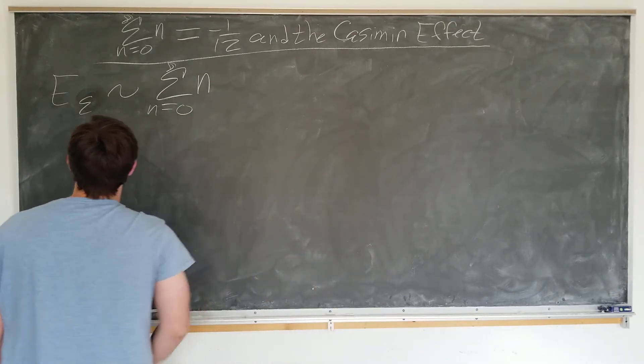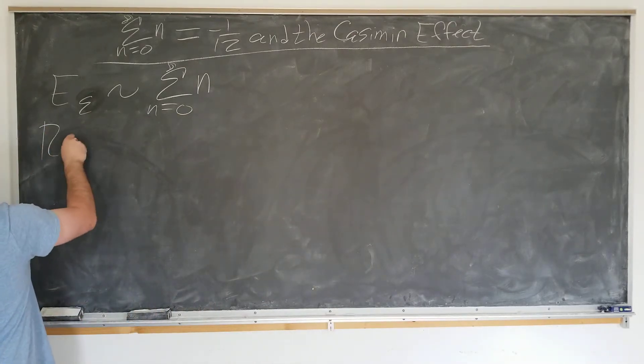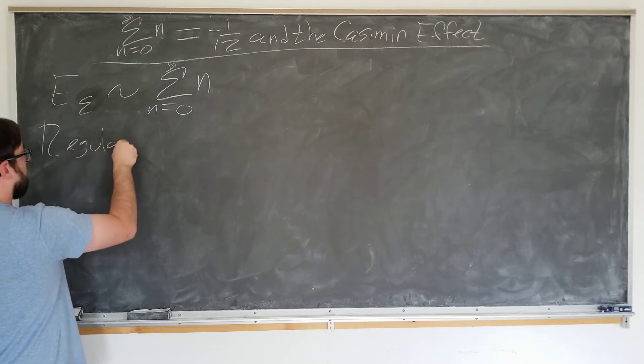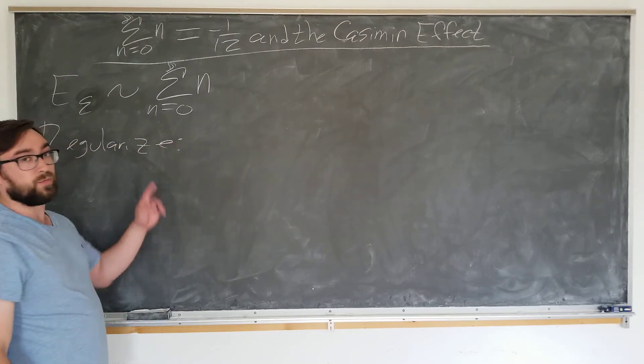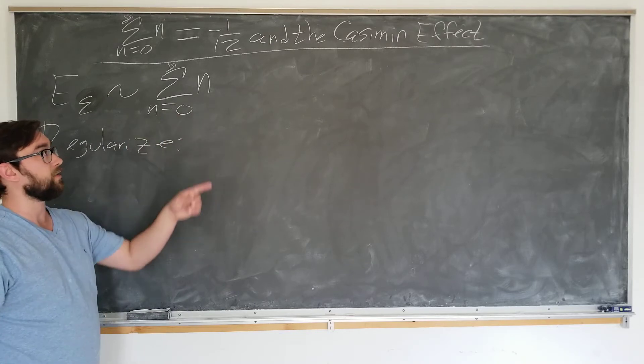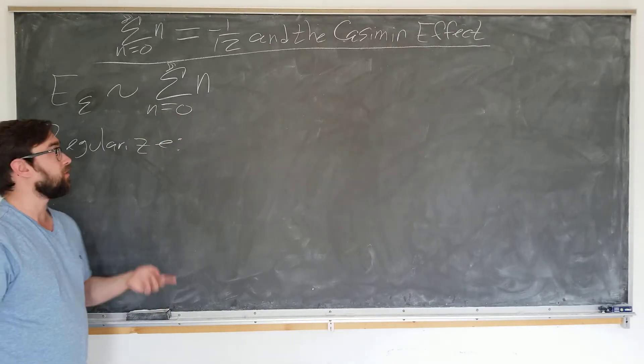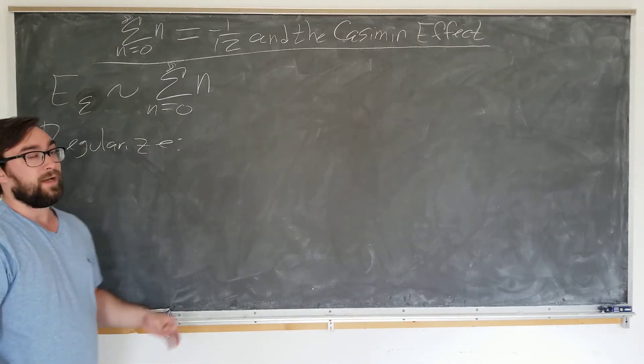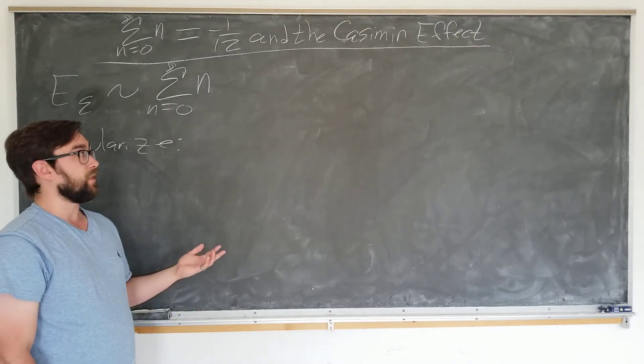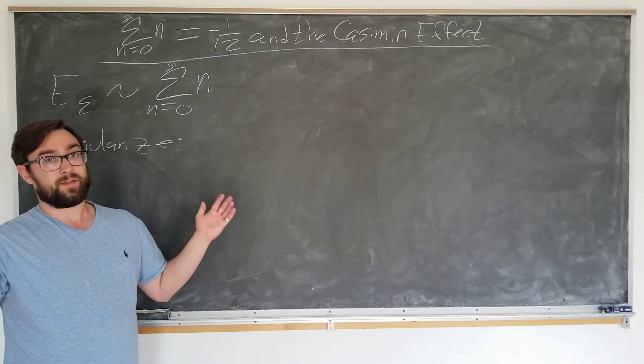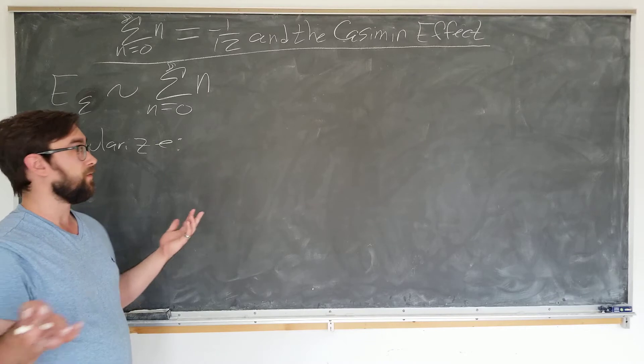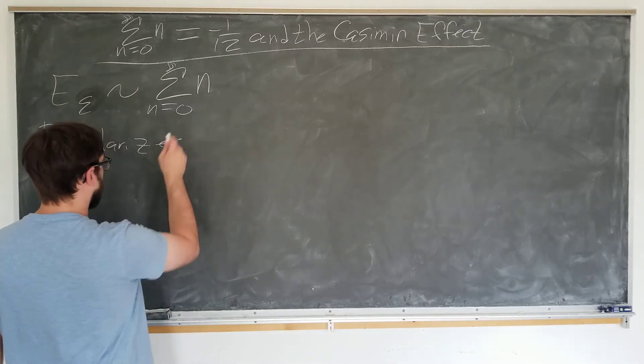We do this by regularizing. What this means is we change the sum by introducing some other parameter, which would be epsilon in this case, and then evaluating the sum using it, letting epsilon go to zero at the end, obtaining something equivalent to the initial sum.